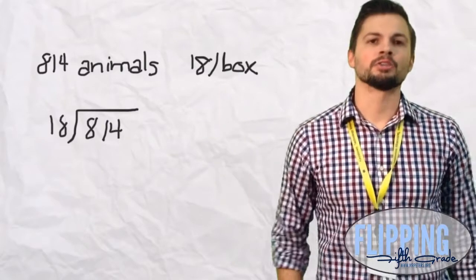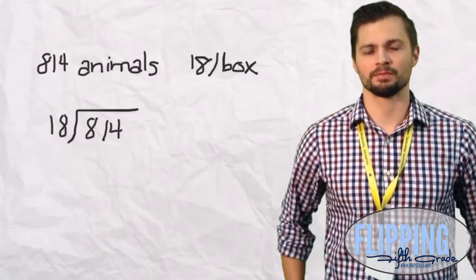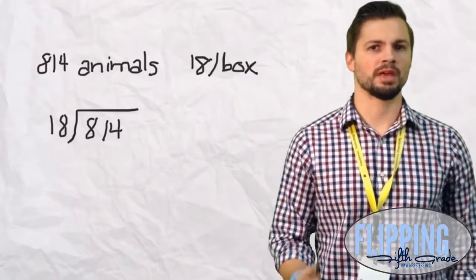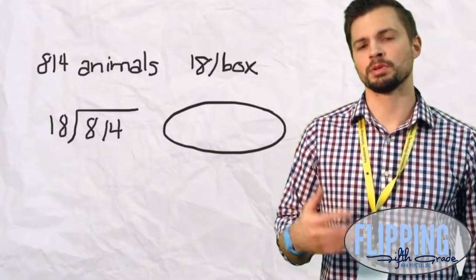So they set up the problem, 814 divided by 18. Now what should be your first step? Your first step should be estimating, finding that compatible number to figure out where we're going to place our first number.